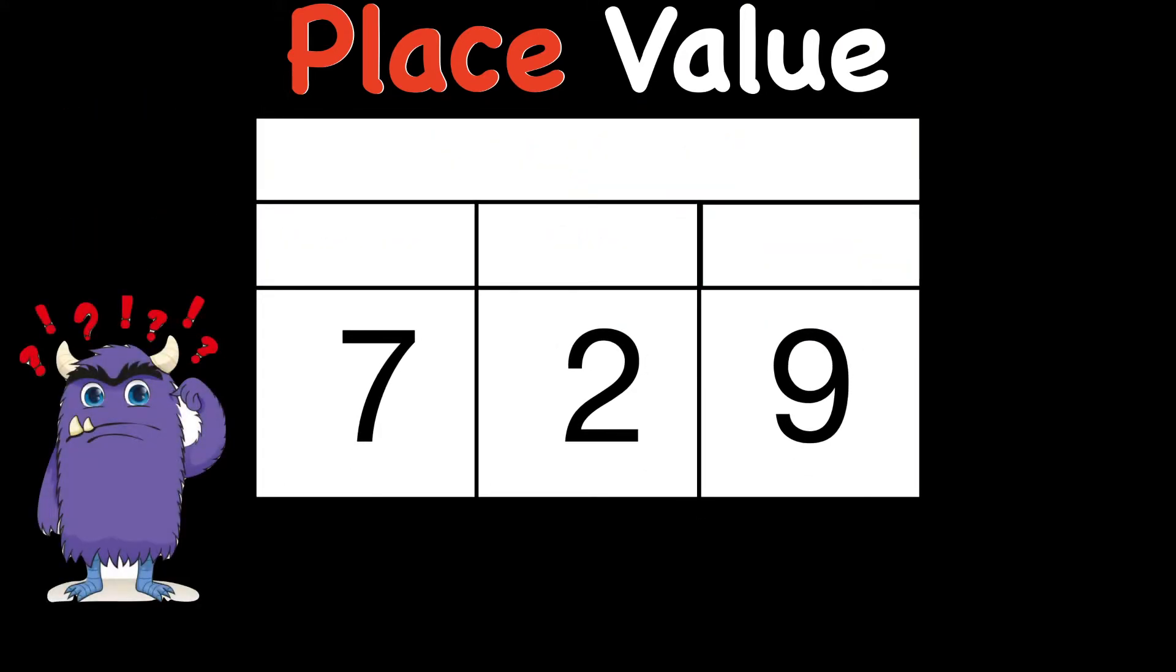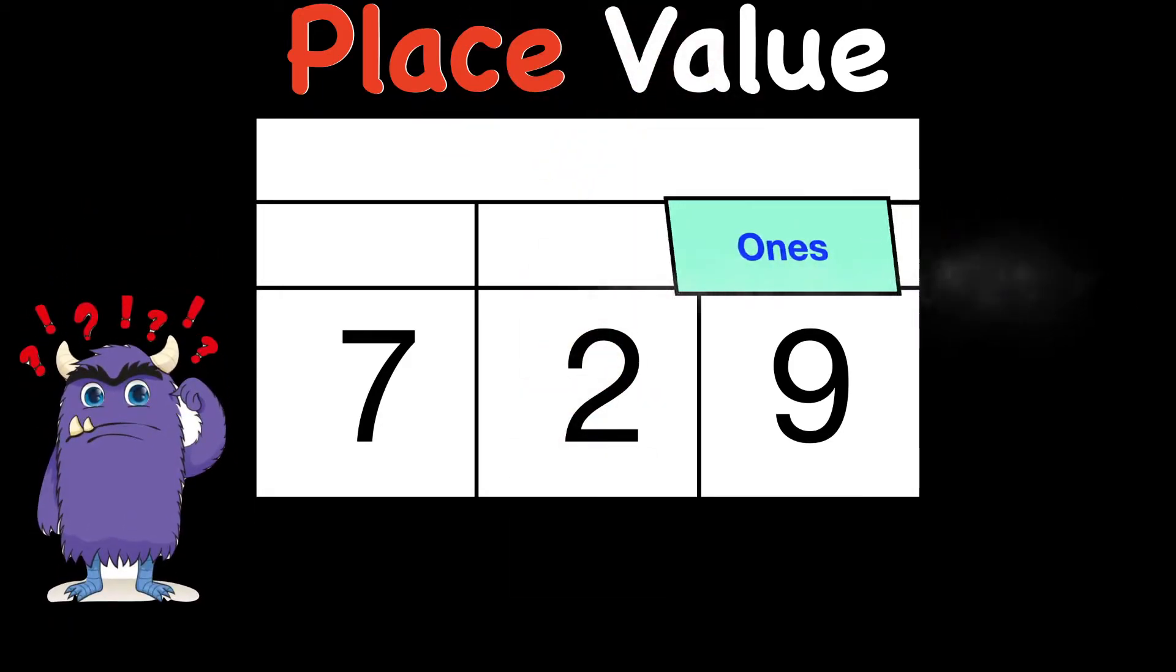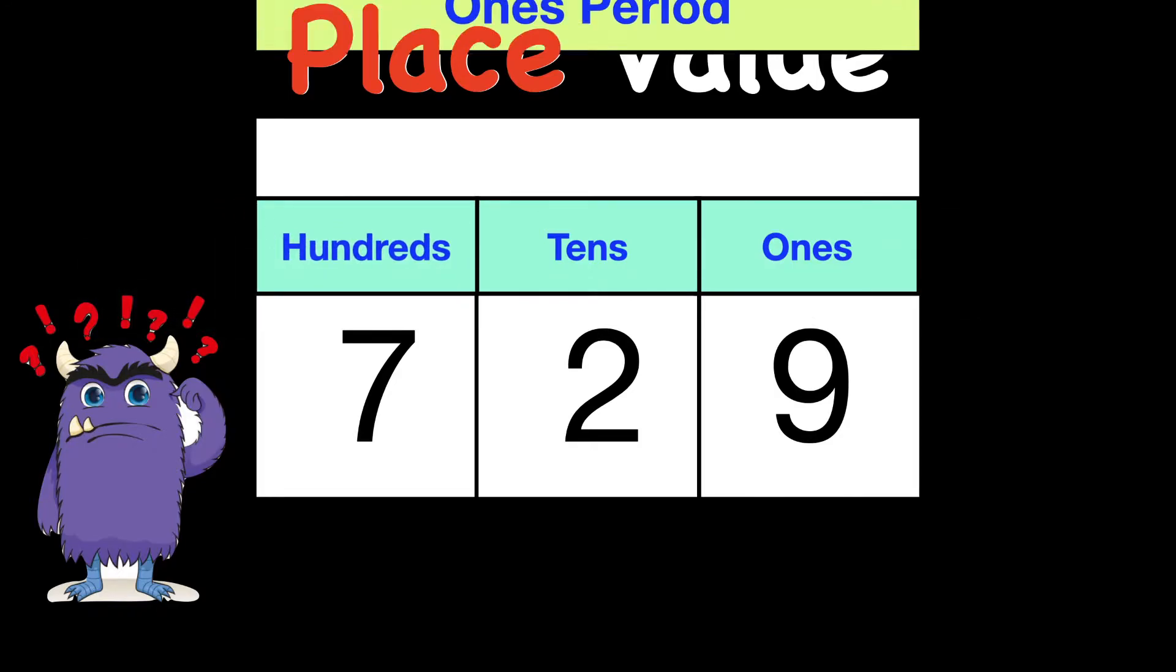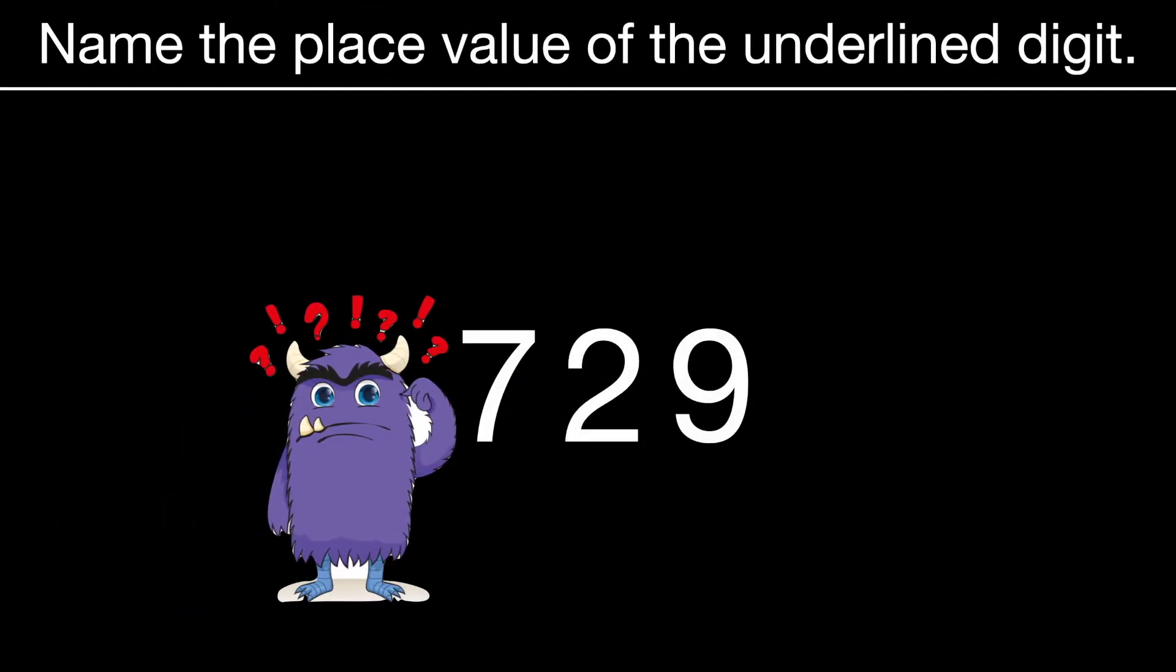Can you remember our three place values? Ready? Ones, tens, hundreds, and those three make up what's called the ones period.